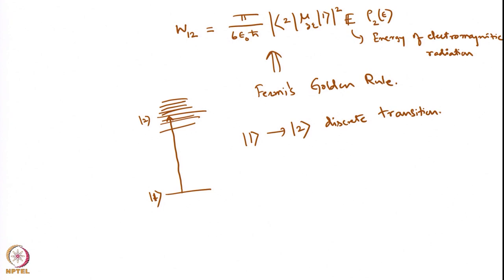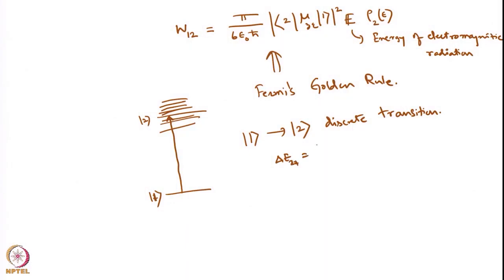When looking at this discrete transition, it will happen at ΔE₁₂ = hν₁₂ — at a very specific wavelength or frequency ν₁₂. If I want to go from state 1 to state 2, I have to supply electromagnetic radiation with the right frequency ν₁₂. But if you are using a candle or some lamp, that is not going to give monochromatic radiation, so ν₁₂ will not be very selective — you get all sorts of ν, out of which only ν₁₂ causes the transition.